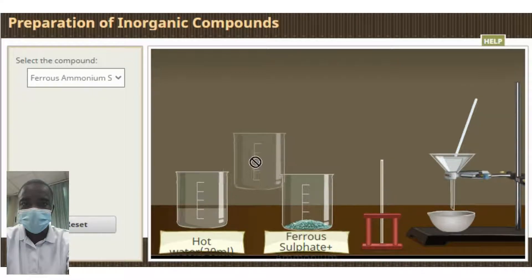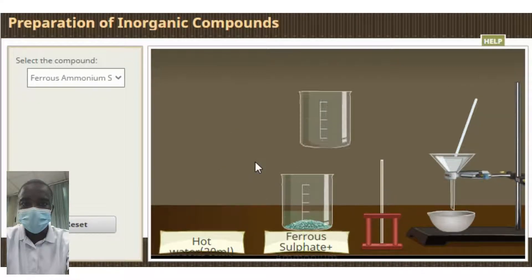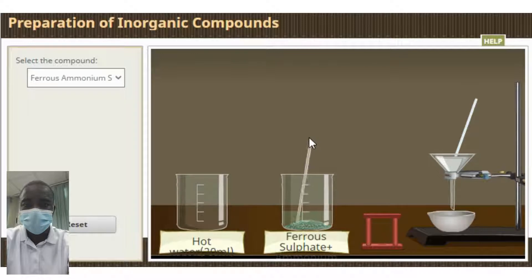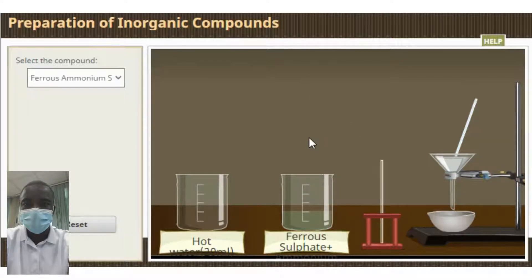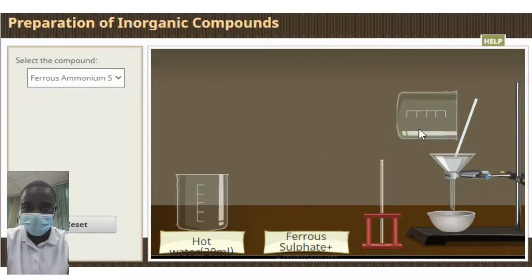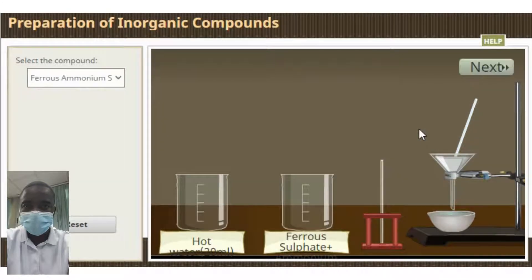A complex inorganic compound is a chemical compound that contains two or more elements and is not classified as a simple compound. Inorganic compounds are molecules that do not contain carbon atoms. The most common type of complex inorganic compound is a metal complex. Metal complexes are compounds in which one or more metal atoms are bonded to ligands.